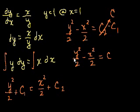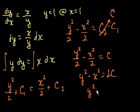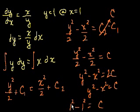Let's clean it up a bit. Multiply both sides by 2 and you get y squared minus x squared equals 2c. Since 2c is still any constant, we can write it as c. So y squared minus x squared equals c. Now let's use our initial conditions to find c. When y is 1 and x is 1: 1 squared minus 1 squared equals c, which is 1 minus 1, so c is equal to 0.